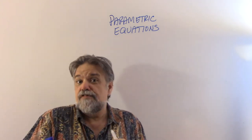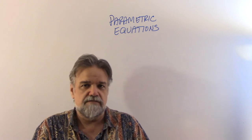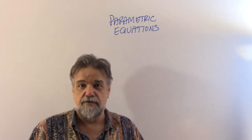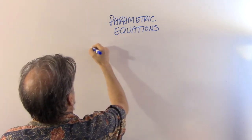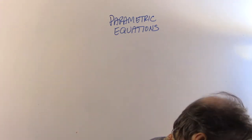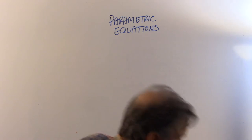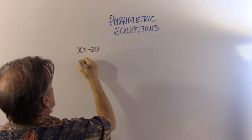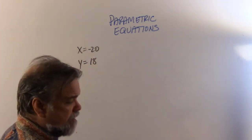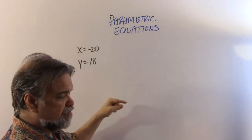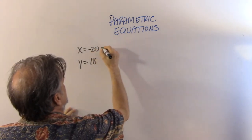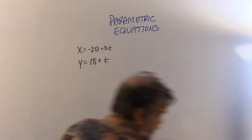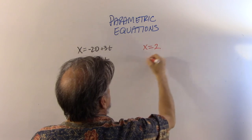So x is a function of t and y is also a function of t. For the black ant — starting at x = -20 and y = 18 — and since it runs right 3 and up 1 per second, we get: x = -20 + 3t and y = 18 + t.